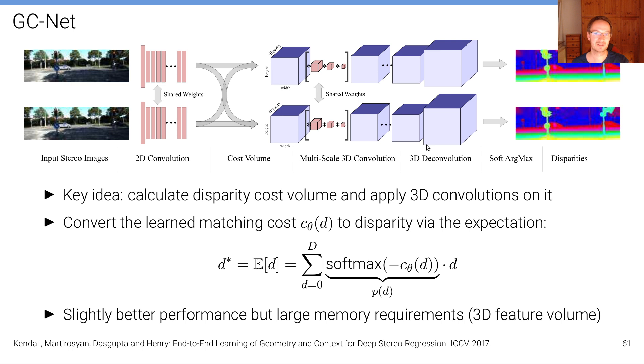was then filtered with a 3D filter that could then adapt to this correlation volume and pick up features in that volume. So the key idea is to calculate the disparity cost volume similar to traditional methods and then apply 3D convolutions on that volume.